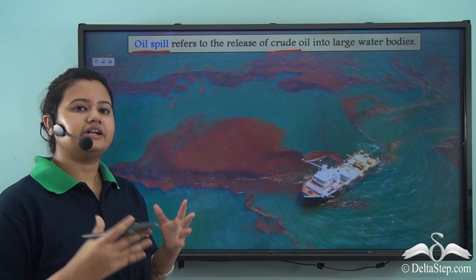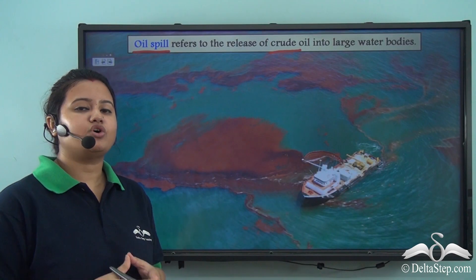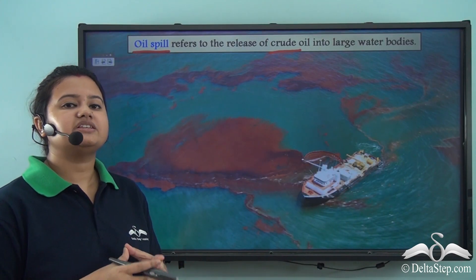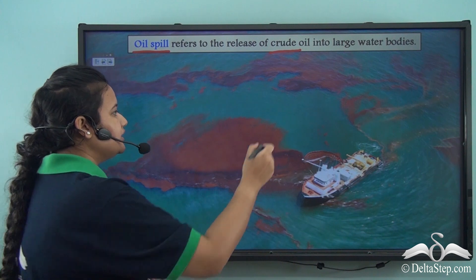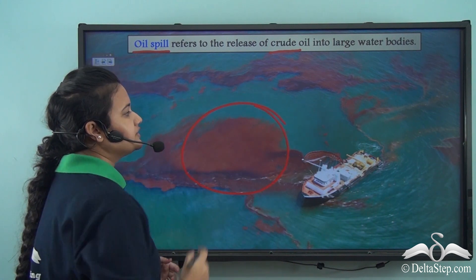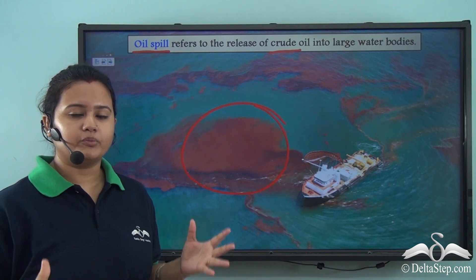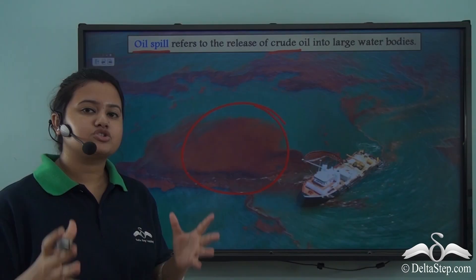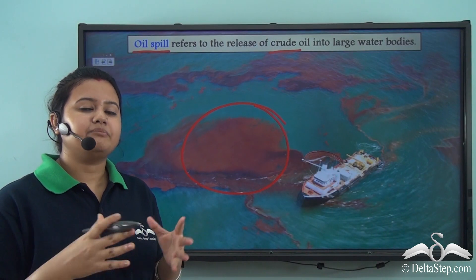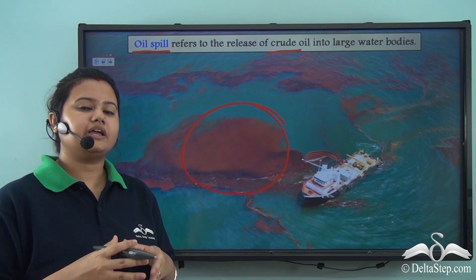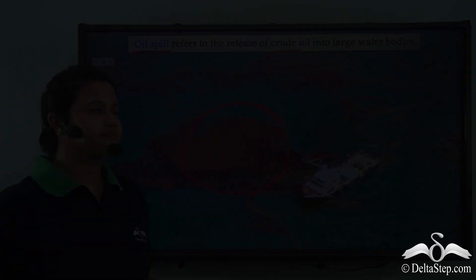This picture depicts the case of an oil spill. Here we see that the oil floats on the surface of a water body as a discrete mass, because oil, as I mentioned, is insoluble in water.